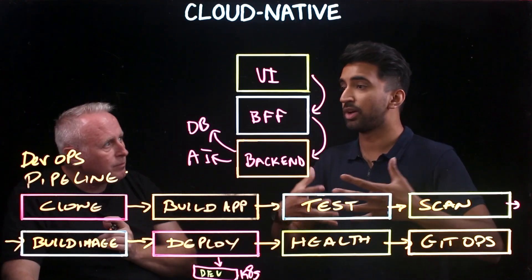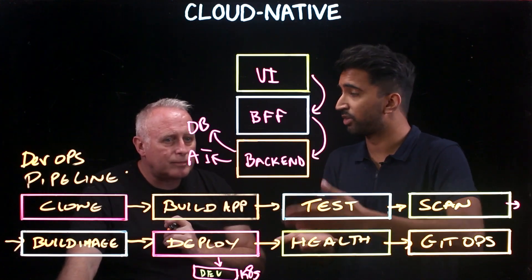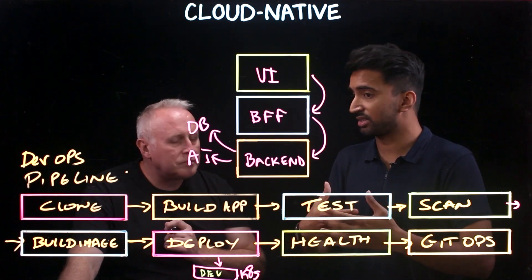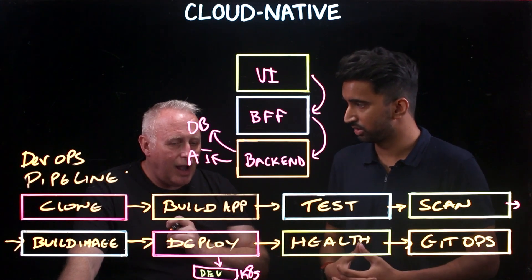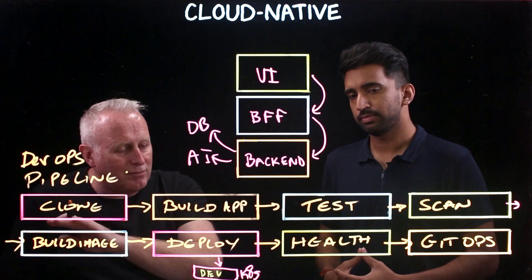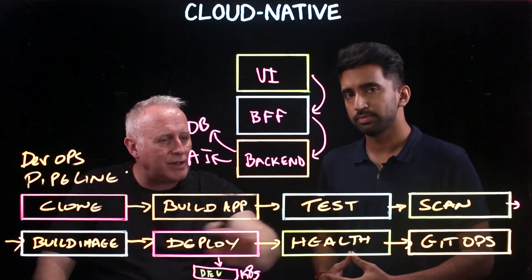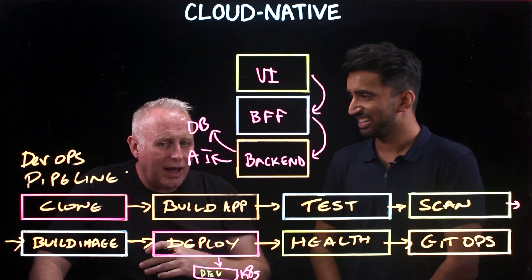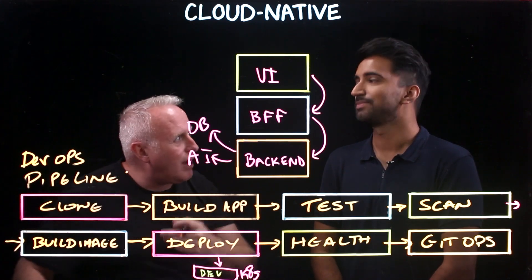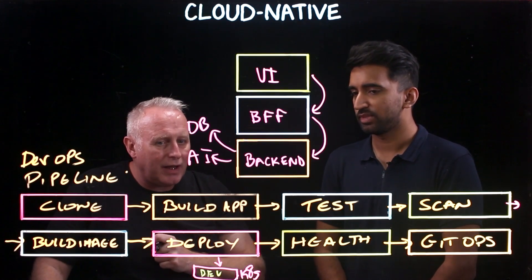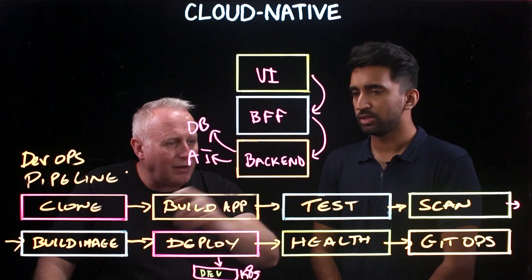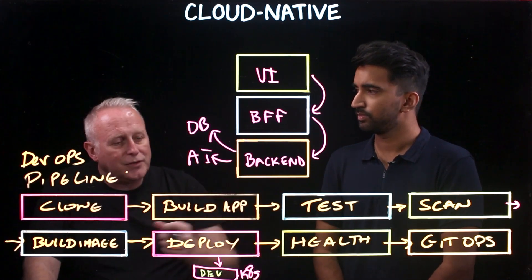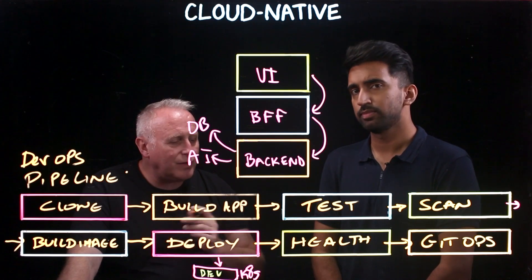The same discipline developers have used with source control to manage different code versions is now being applied by ops teams to operationalize the deployment of container images and applications. It comes back to discipline and repeatability — the less humans touching these steps, the better. A common finding with clients is a human process in the middle that slows execution. By automating all of this, you can prove code is good enough for production and move toward the golden milestone of continuous delivery.